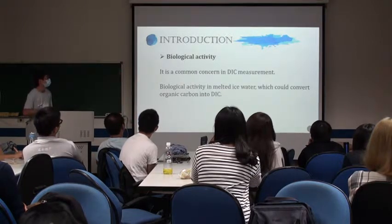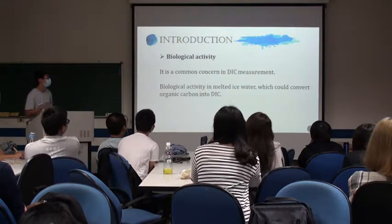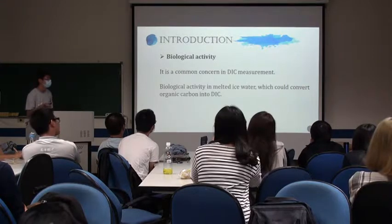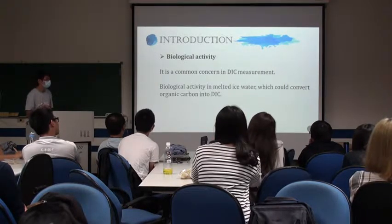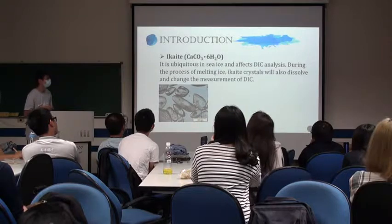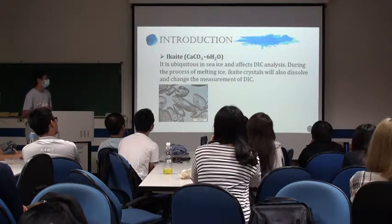Biological activity is a common concern in DIC measurement. In melt ice water, biological activity could convert organic carbon into DIC, increasing its concentration. Ikaite is ubiquitous in sea ice and affects DIC analysis. During the melting of ice, these crystals will dissolve and change the measurement of DIC.